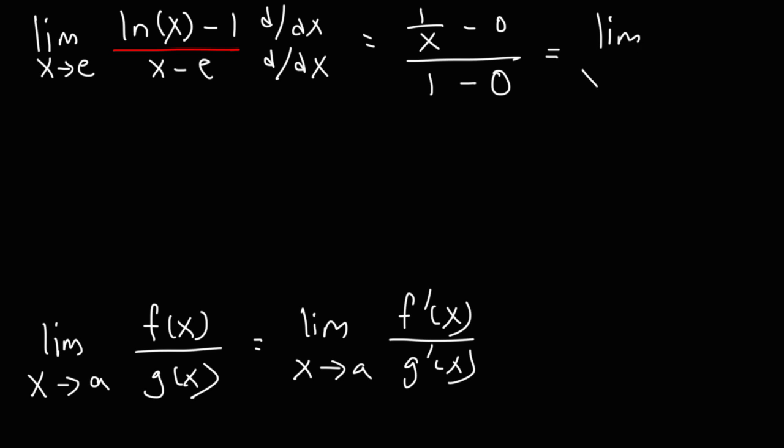Well, technically, the limit as x approaches e of 1 over x. So the final answer for this problem is 1 over e. Because at this point, we could use direct substitution. So that's how we can evaluate this particular limit.